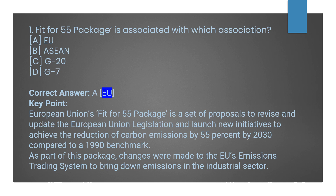The very first question: the FIT455 package is associated with which association? Option A: EU (European Union). Option B: ASEAN. Option C: G20. Option D: G7. The correct answer is Option A, European Union. The EU's FIT455 package is a set of proposals to revise and update EU legislation and launch new initiatives to achieve a reduction of carbon emissions by 55% by 2030, compared to a 1990 benchmark.